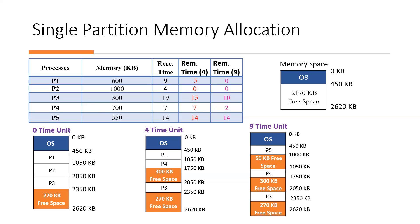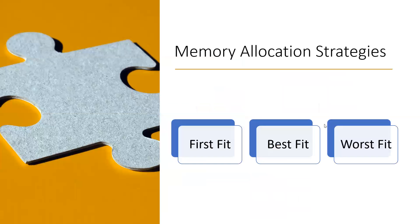All processes are eventually allocated to memory. Processes like P1, P2, P3, P4, and P5 are all executed under this single-partition memory allocation scheme. In this way, we allocate processes to memory. We will then move on to multiple-partition memory allocation, and before that, in the next tutorial, we will discuss memory allocation strategies: first-fit, best-fit, and worst-fit. Keep watching. Goodbye.